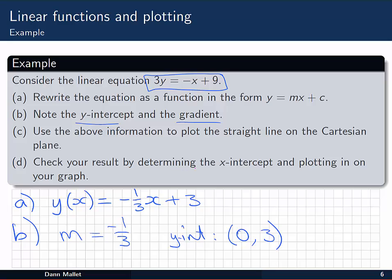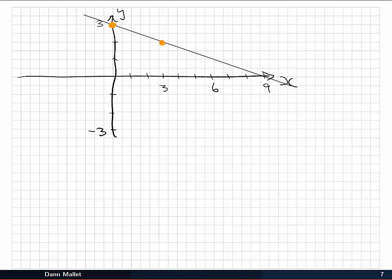Now the last thing that we're asked to do is to check the result by determining the x intercept, and plotting it on the graph. So the x intercept, remember, is when we have y equal to 0. So we need to solve 0 = -1/3 x + 3. Which we can rearrange to get -1/3 x = -3. And finally, x equal to 9. We're multiplying both sides by -3. So we need y equals 0 and x equals 9. Which, if you come back over here, we can see is exactly where it's passing through the x axis. As we'd hope for our x intercept. So there we go. There's our first straight line graph for our straight line function.